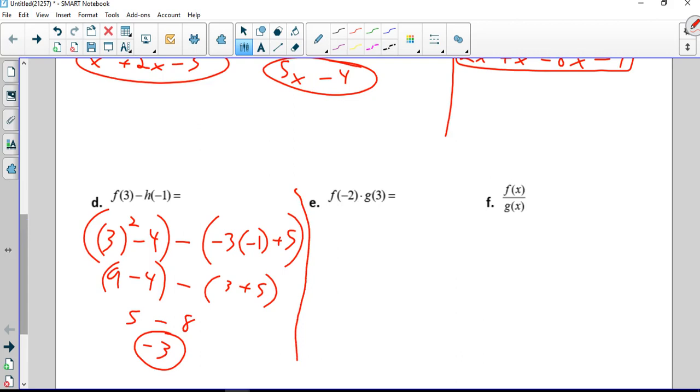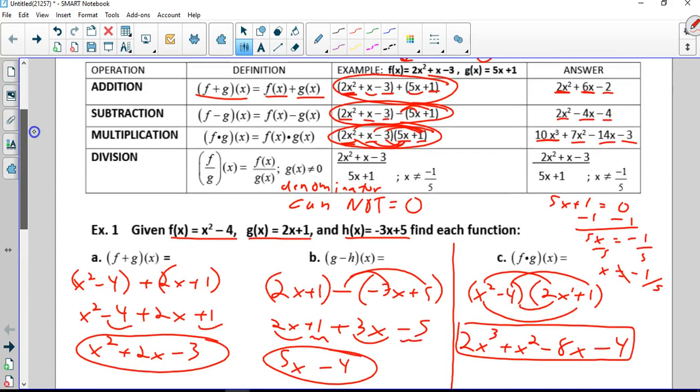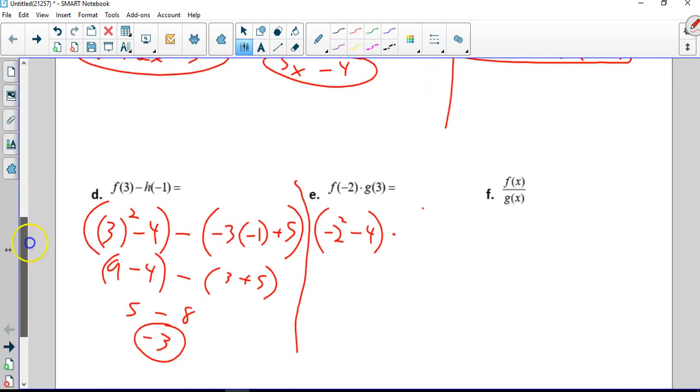I'm going to plug in negative 2 into f of x, which again is right over here. So negative 2 squared minus 4 times g of 3. g is 2x plus 1, times 2 times 3 plus 1. Negative 2 squared is 4, 4 minus 4 is 0, times, it doesn't matter what we get really, but it's 2 times 3 is 6 plus 1 is 7, and times 0 is 0.